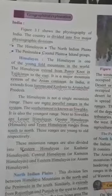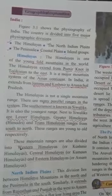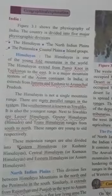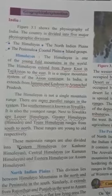Figure 3.1 shows the physiography of India. The country is divided into five major physiographic divisions: the Himalaya, the North Indian plains, the peninsula, the coastal plains, and the islands.